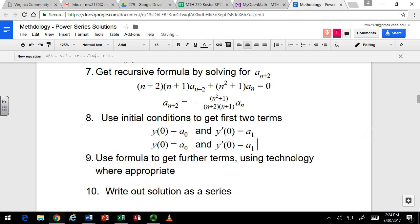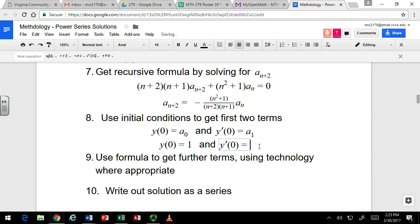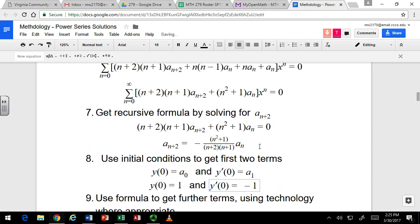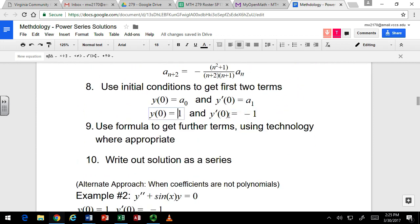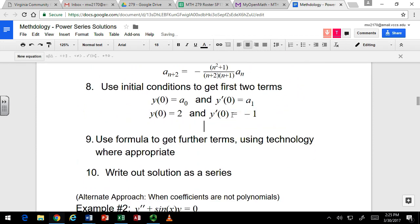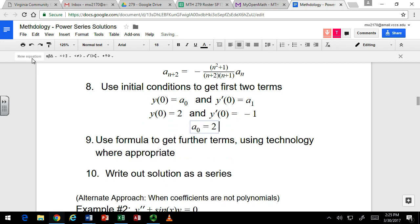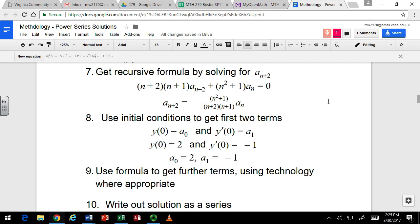So if you had the first two, then you can use the recursive formula to get the other ones. This is just reminding you that those first two terms come from the initial conditions. So for our problem, what is it? y(0) = 2 and y'(0) = -1, which tells you a sub 0 equals 2 and a sub 1 equals negative 1.